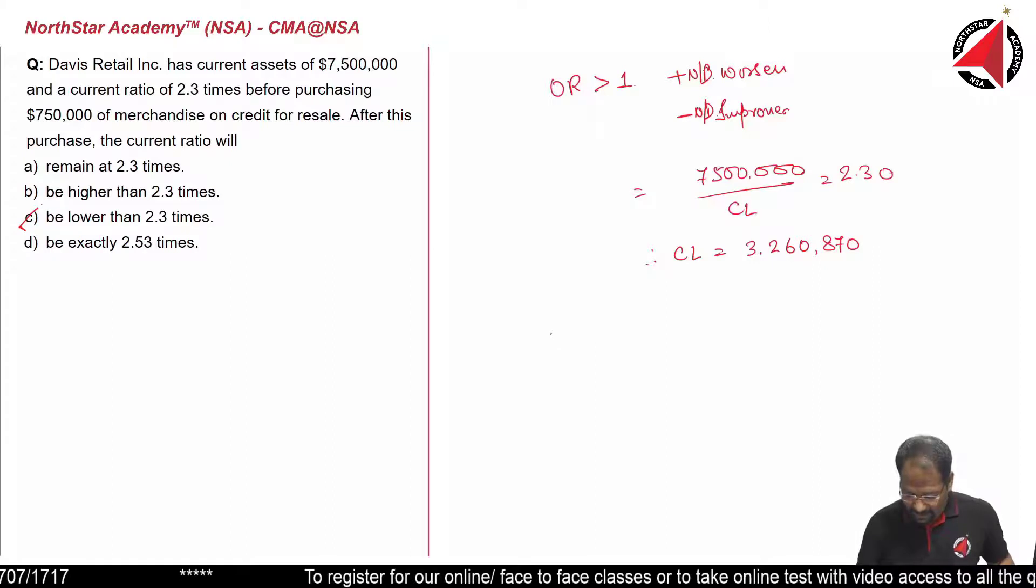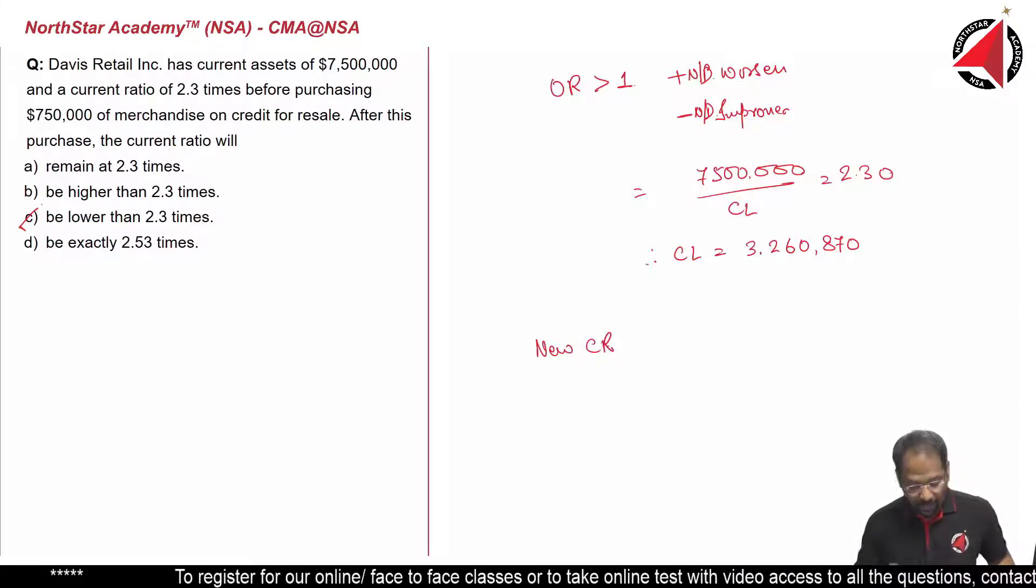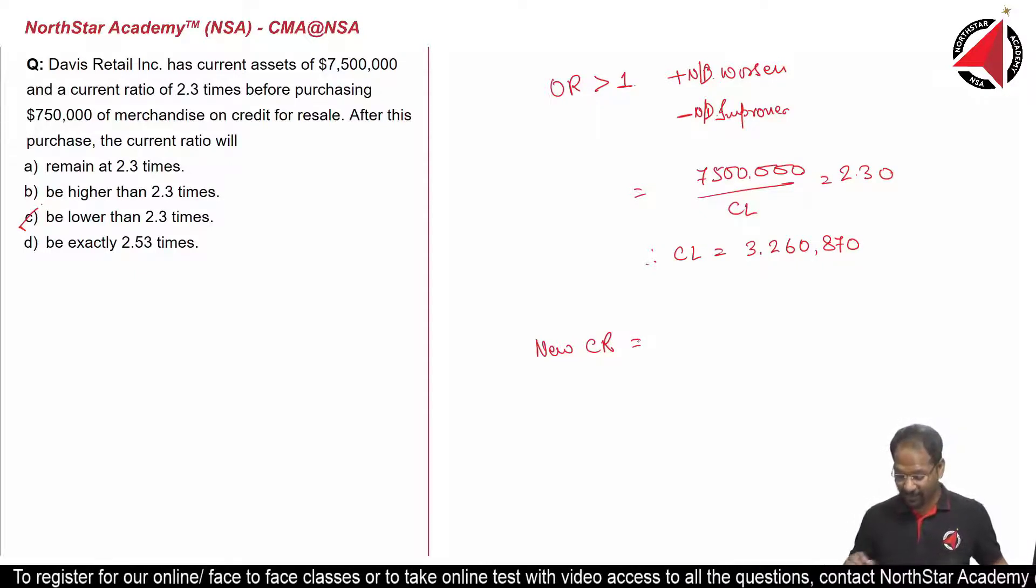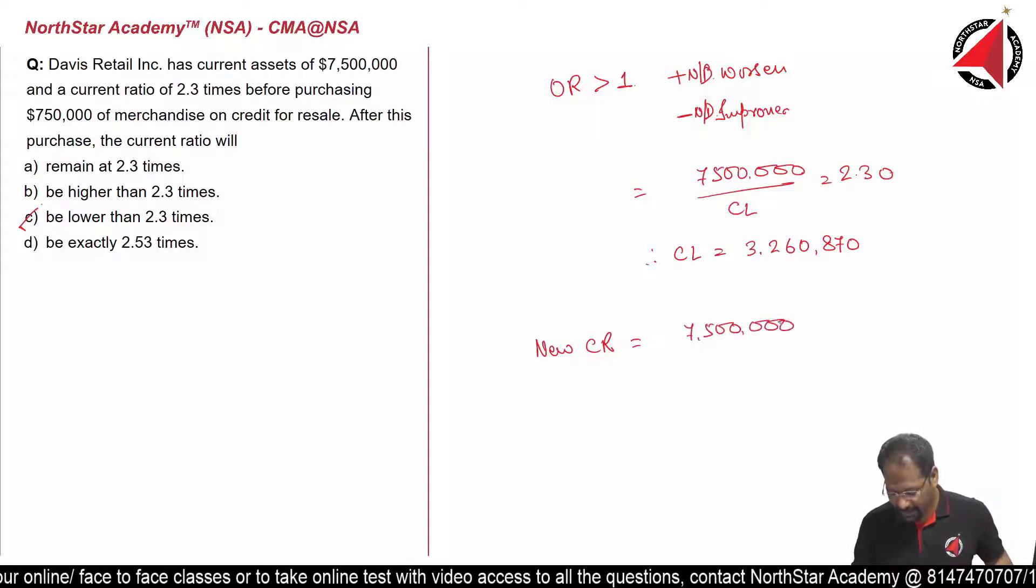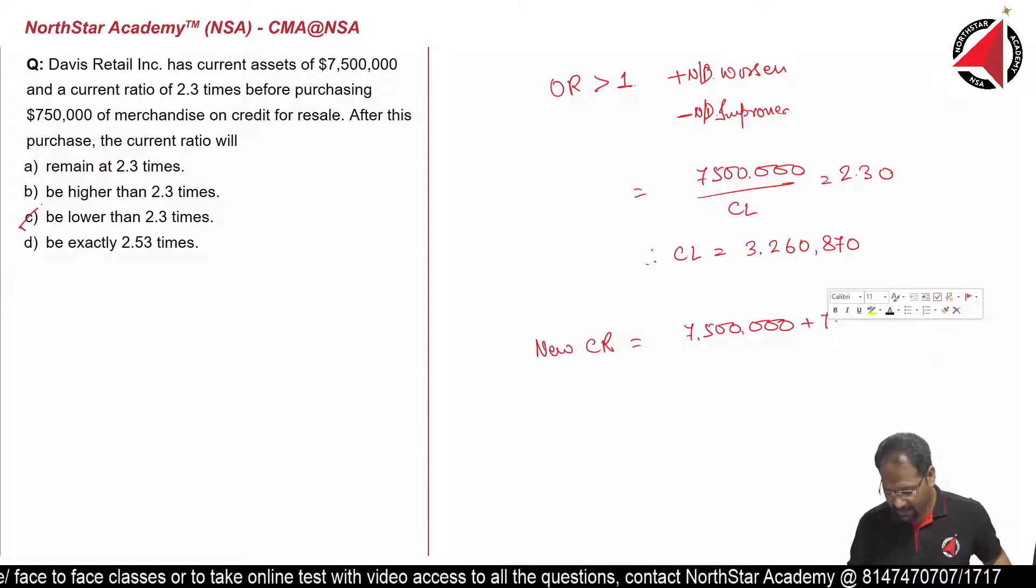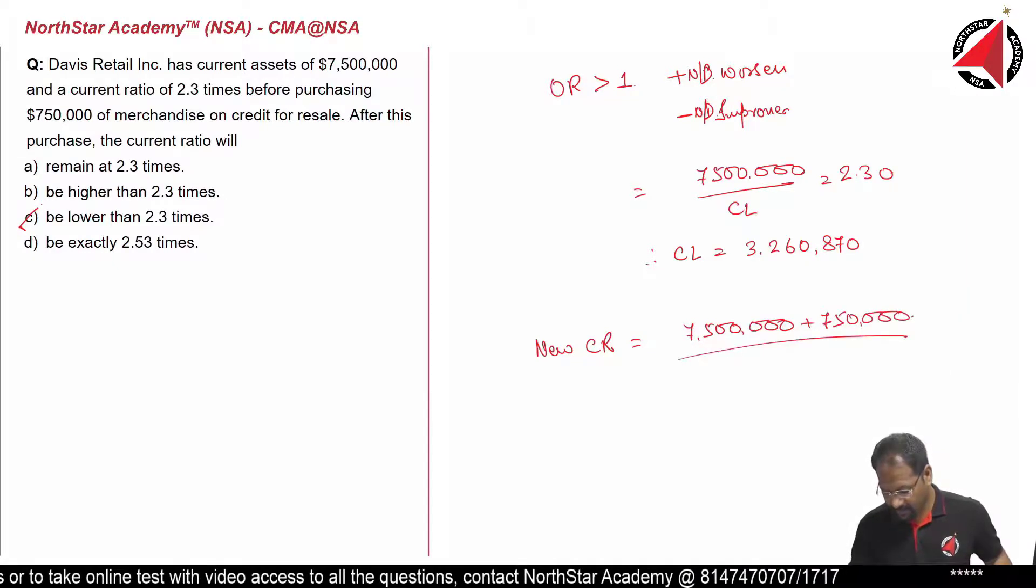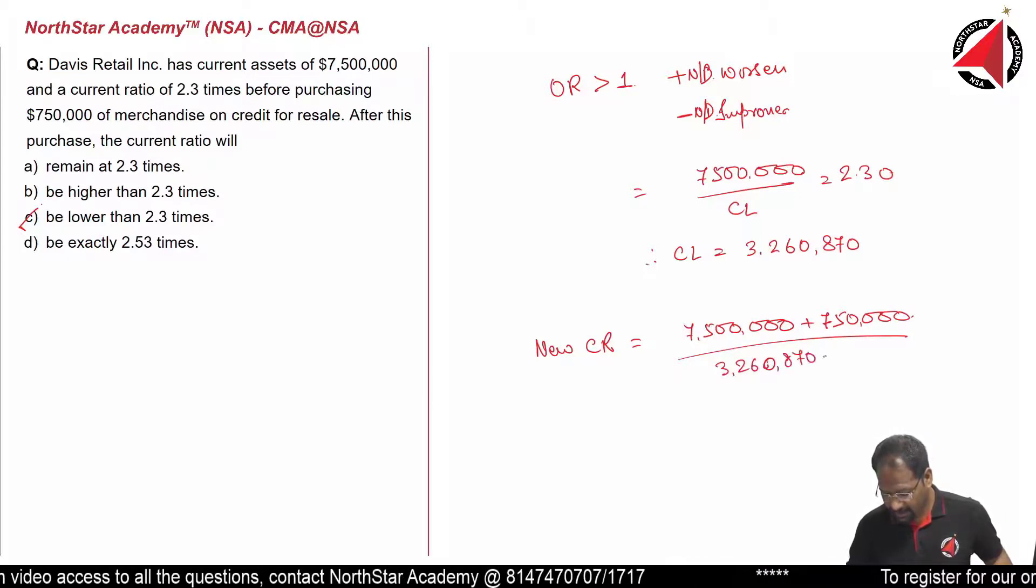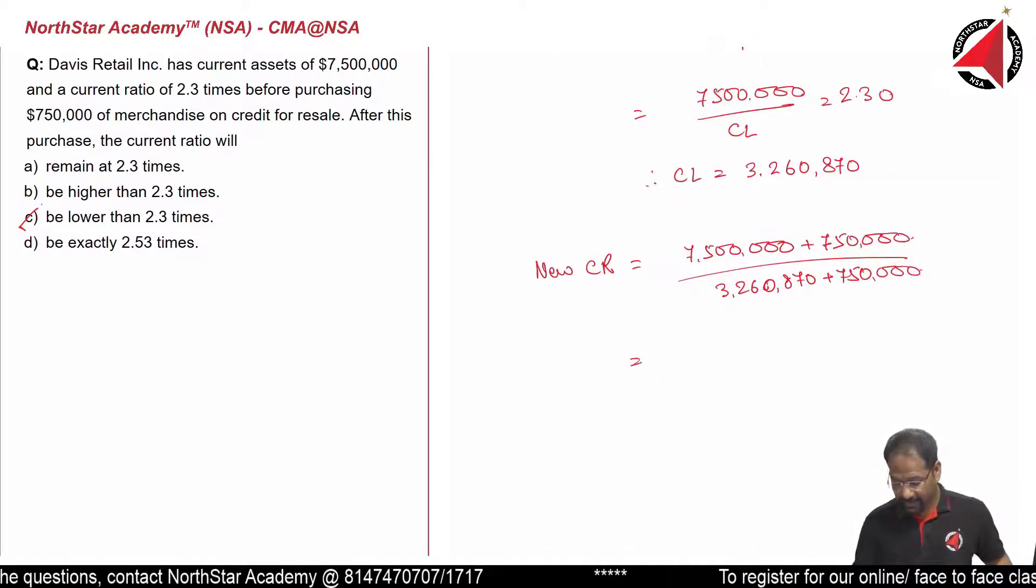Now let's calculate the new ratio. New current ratio when $750,000 worth of merchandise is purchased on credit. The numerator will be 7.5 million plus 750 thousand, divided by 3,260,870 plus 750,000.